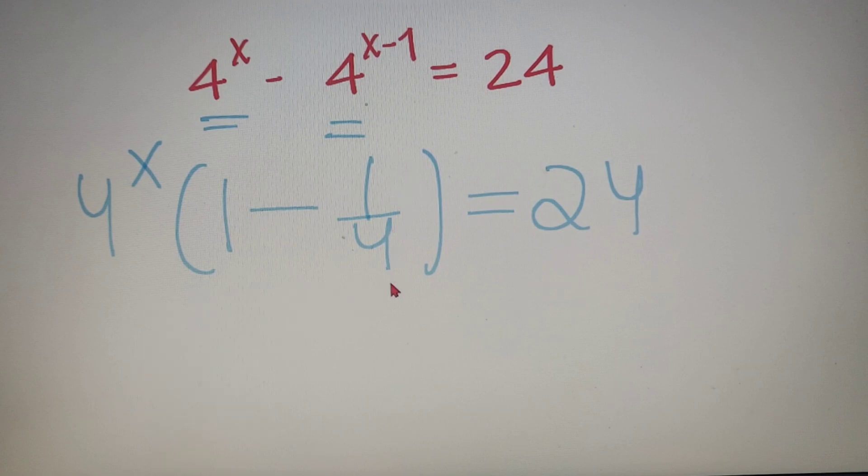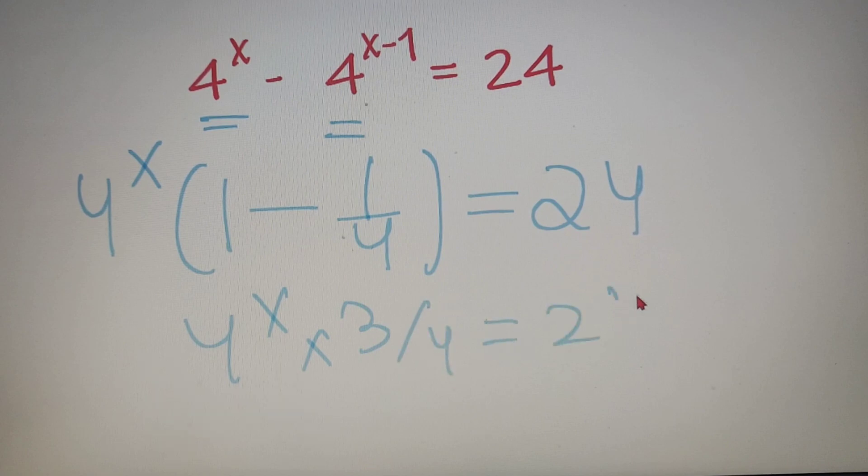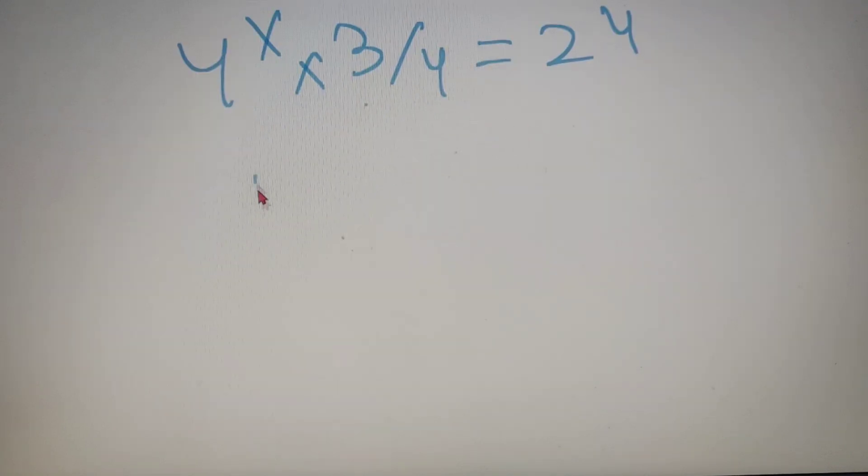Now 1 minus 1 by 4 can be written as 3 by 4. So 4 to the power x into 3 by 4 is equal to 24. Now I can rewrite it as 4 raised to the power x is equal to 24 into 4 whole divided by 3 which is equal to 32.